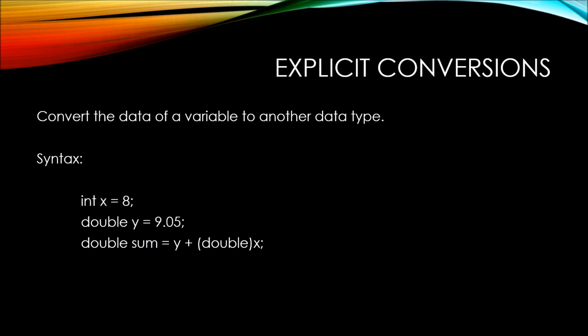This way, the value of x is still 8, and it is a data type of int as we defined it in the first line. But here, while it's being evaluated, we can temporarily explicitly convert it to a type of double.